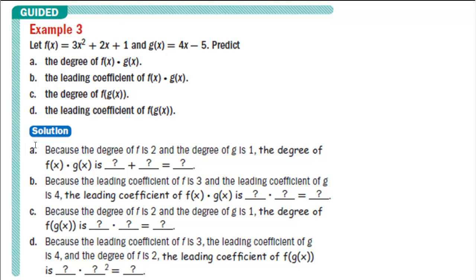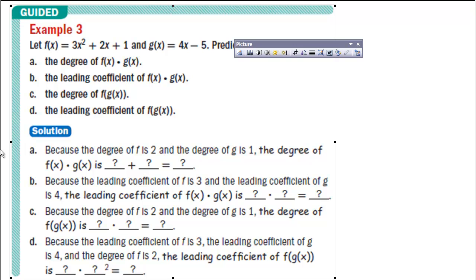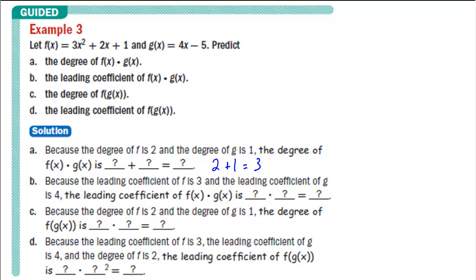Example 3 is the guided example from your book — it's a good problem. It says: let F of x equal 3x squared plus 2x plus 1, and G of x equal 4x minus 5. Predict part A: the degree of F of x times G of x. Because the degree of F is 2 and the degree of G is 1, when multiplying polynomials the powers on the exponents are added together. Therefore, the degree of F of x times G of x would be 2 plus 1, which equals 3.